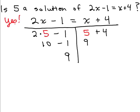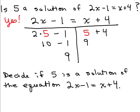The directions in a book or on a test may be written a little differently — something like: decide if 5 is a solution of the equation 2x minus 1 equals x plus 4. Instead of asking a yes-or-no question, they ask you to decide whether it's a solution. You would do the problem exactly the same way: write the equation, simplify the left-hand side, simplify the right-hand side, and then state yes, it's a solution.